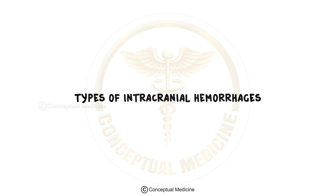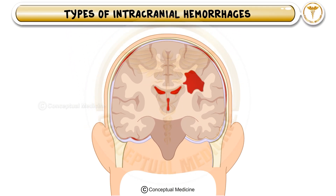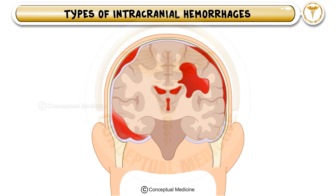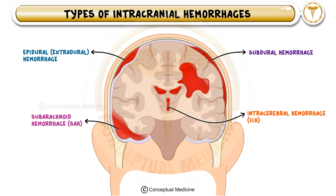Welcome to today's lecture, where we will explore one of the most crucial topics: intracranial hemorrhages. An intracranial hemorrhage refers to bleeding inside the skull due to a ruptured blood vessel, which can occur in different locations in and around the brain. Depending on where the bleeding happens, we classify intracranial hemorrhages into five main types: epidural hemorrhage, subdural hemorrhage, subarachnoid hemorrhage, intracerebral hemorrhage, and intraventricular hemorrhage. Each type has distinct causes, symptoms, and radiological features, so let's go through them one by one.